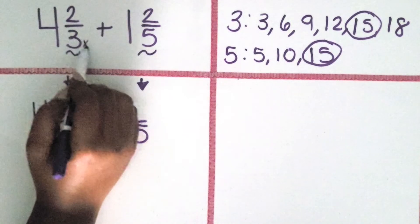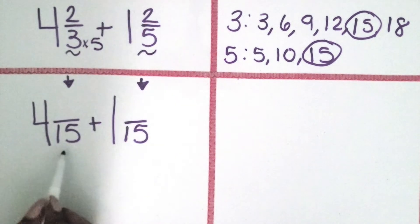So how do we go from thirds to fifteenths? Or from 3 to 15? Well, we know that 3 times 5 is 15. Or there are 5 groups of 3 in 15.